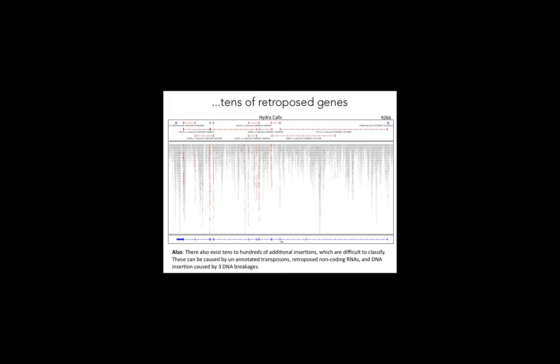Retro-posed genes — processed pseudogenes — can also insert via retrotransposition machinery. The signal looks like multiple deletions that all coincide with different exon combinations of a gene annotation, suggesting a messenger RNA was reverse-complemented and inserted into the test genome. We know there was an insertion somewhere but not exactly where. This is more common in the mouse genome, where retrotransposition is still active, and is a very rare event in the human genome.